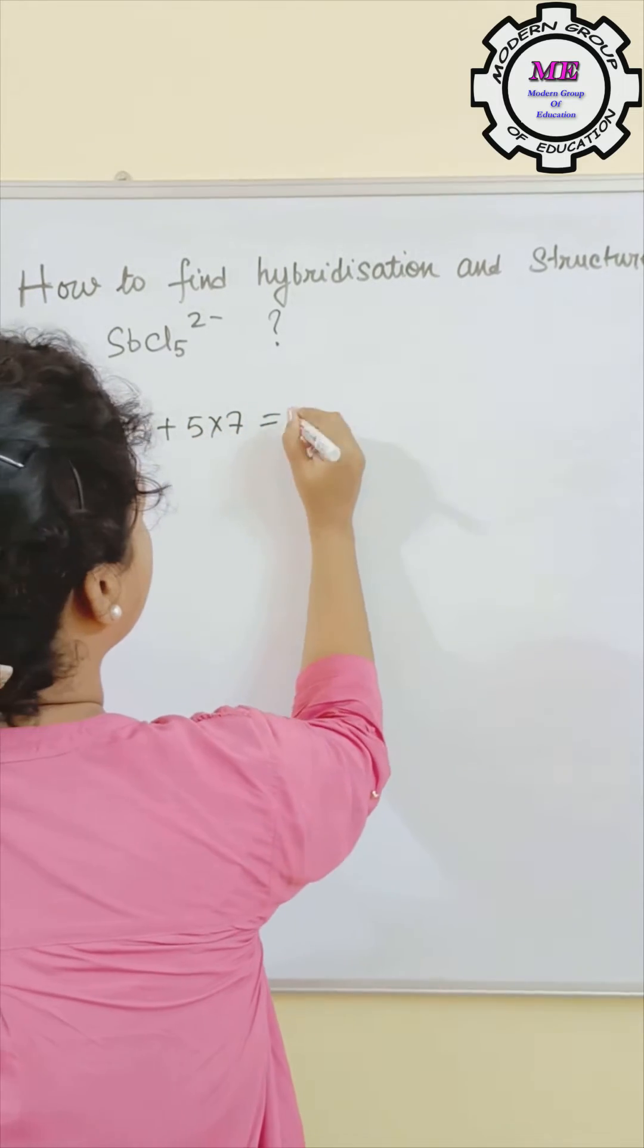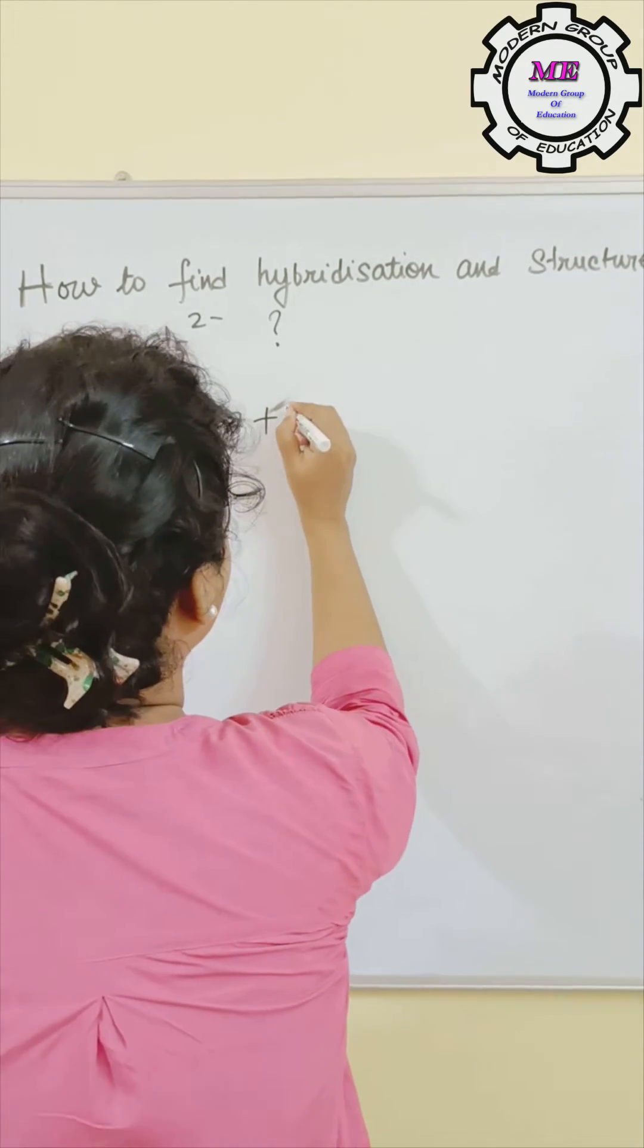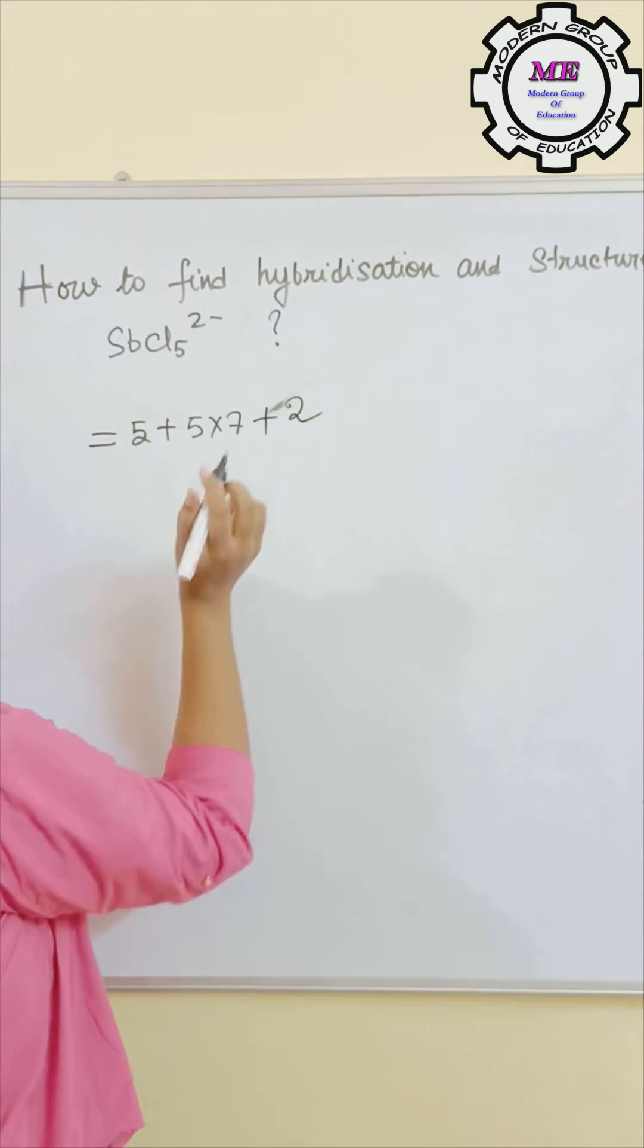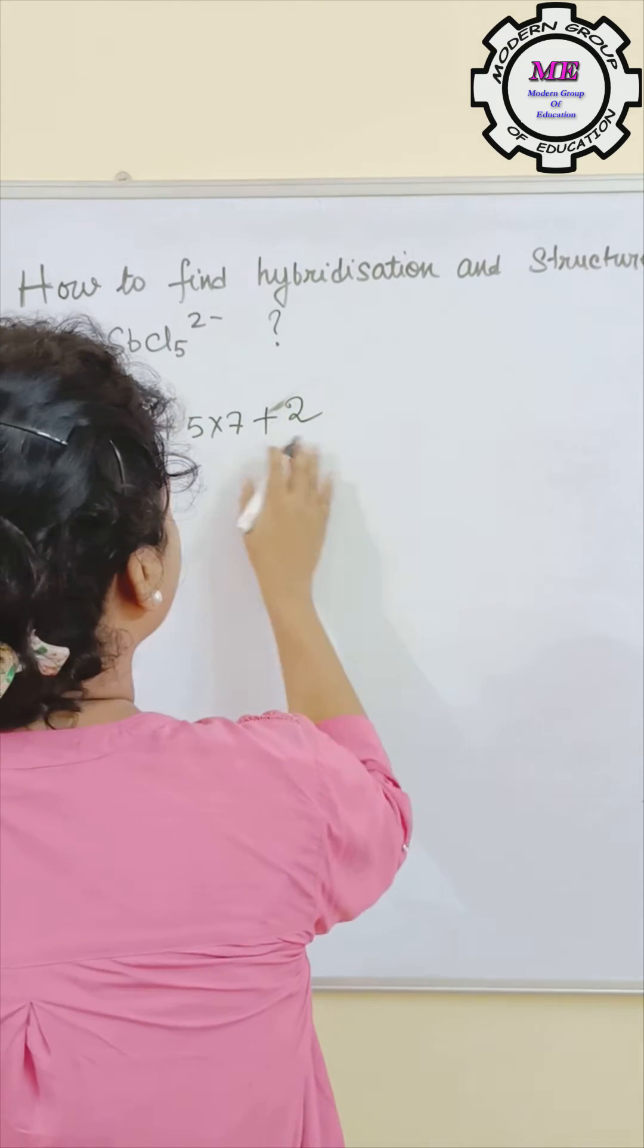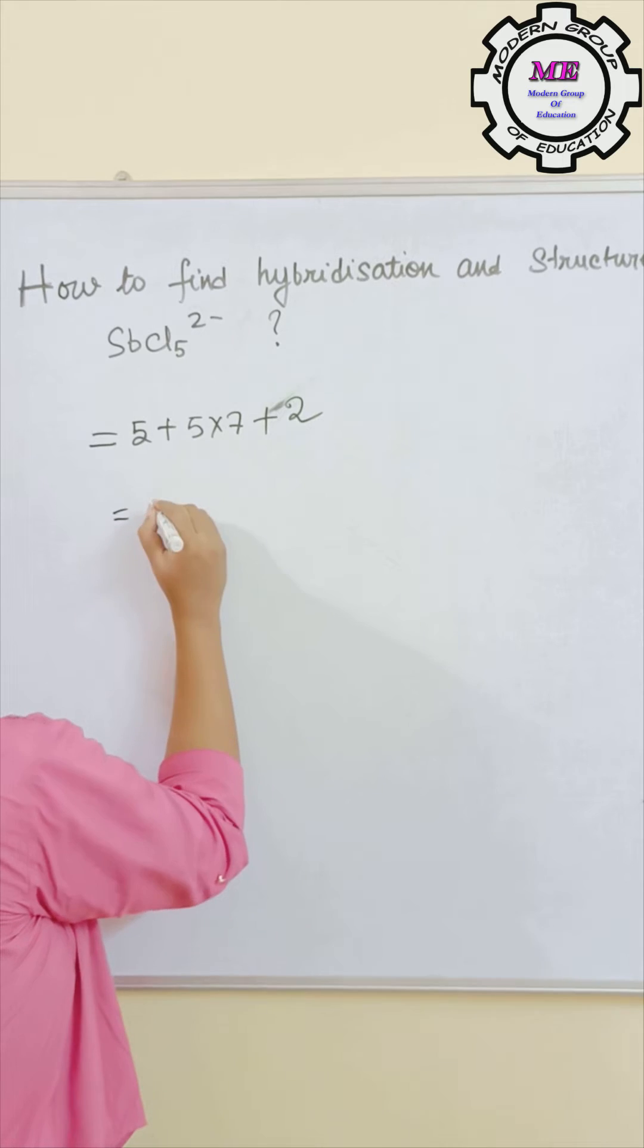5 into 7 because there are 7 valence electrons for chlorine and plus 2 for the minus 2 charge. So you have to add all of this and that comes to 42.